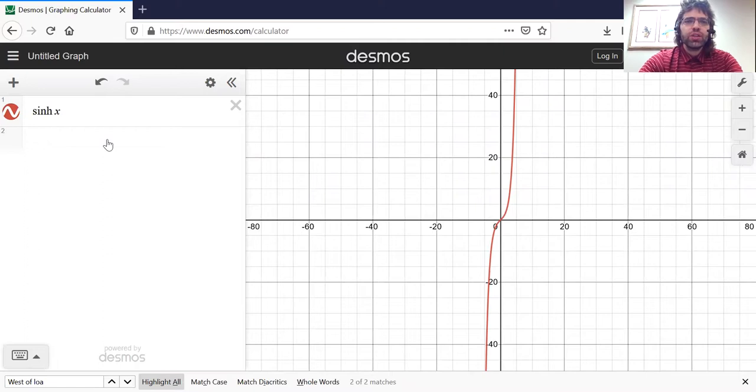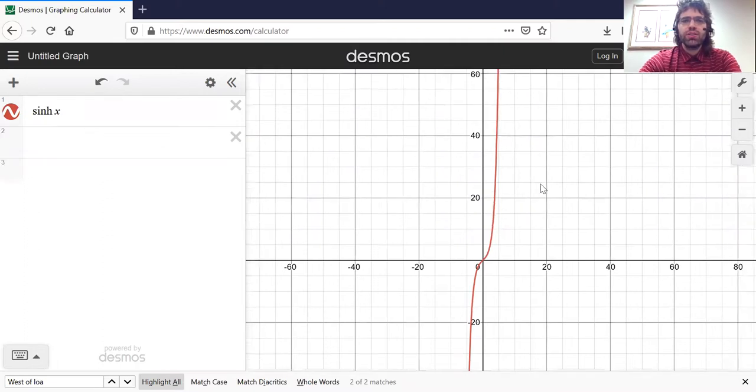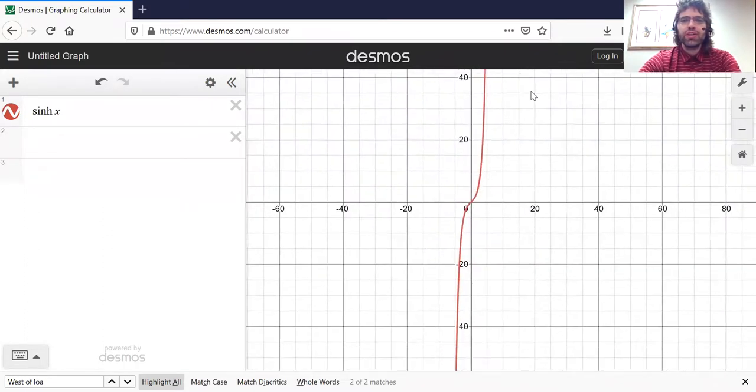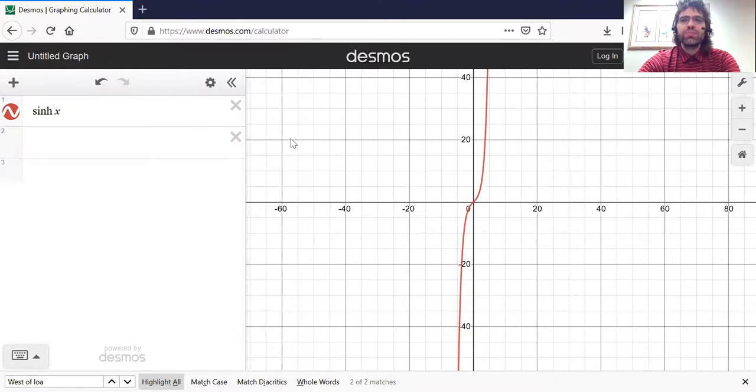But rather than a polynomial, what this is actually looking like is exponential growth, which, considering that the hyperbolic sine was defined in terms of exponential functions, shouldn't be super surprising.